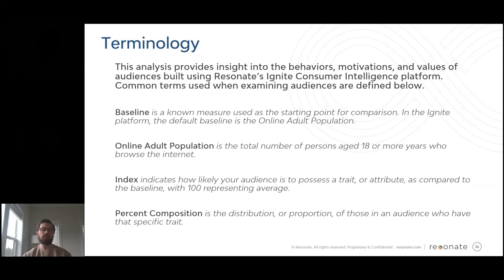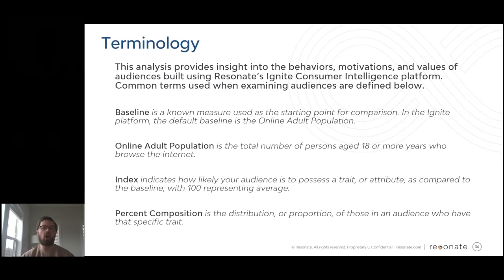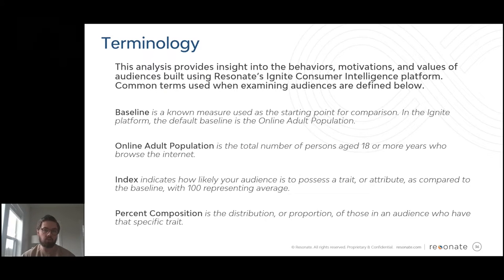The first term is the baseline. You can think of this as our starting point for comparison — the audience against which all of the insights for our target audience are compared. By default, the baseline typically is our online adult population, meaning all persons 18 plus who use the internet. The key metrics we leverage are percent composition and index.